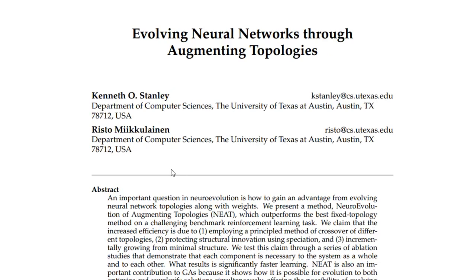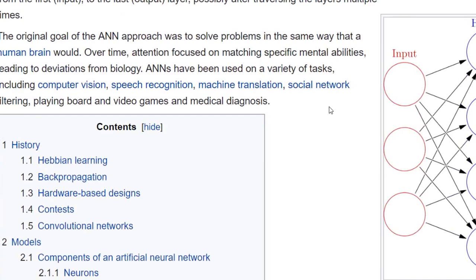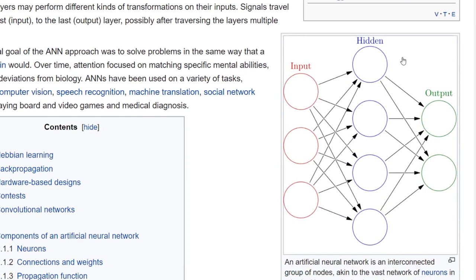If you don't know what this is, this is a method for making and training neural networks through evolution, where you change both the weights of the network and also the connections as well as the nodes. This is a representation of a neural network with an input, hidden, and output layer. There may be more than one hidden layer, but this is what's called a fully connected feed-forward network.